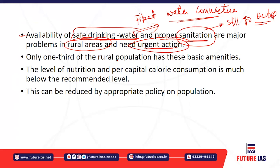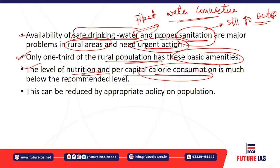Only one third of the rural population has these basic amenities, which is shocking. The level of nutrition and per capita calorie consumption is much below adequate levels. Barriers include low purchasing power, limited economic and social reach of food, caste-related equations affecting availability, and corruption at the government level. Per capita calorie consumption is very low in India, and appropriate policy implementation is needed to tackle such issues.